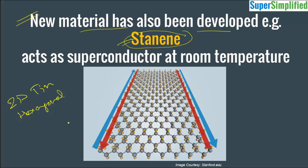This is a tin sheet type of thing. What scientists did was they took a rod of tin and cooled it to its critical temperature, and it started exhibiting superconductance. Then they increased the temperature again and the material started losing the property of superconductivity. And when it came to room temperature, it completely lost the superconductivity.